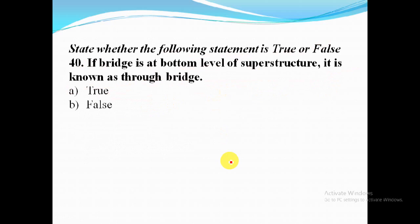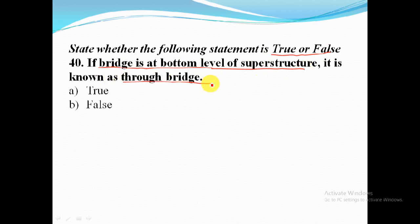Last question: state whether the following statement is true or false. Statement: if the bridge floor is at the bottom level of the superstructure, it is known as a through bridge. This is a true statement, so option A is the correct answer.